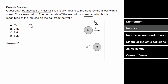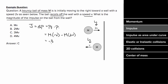So the impulse J is going to be equal to the change in momentum. The change in momentum is p final minus p initial. So the final momentum is going to be the mass times the final velocity, but this velocity is heading leftward, so you can't forget the negative sign, minus the initial momentum, which would be M times 2v, which gives a net impulse of negative 3mv.